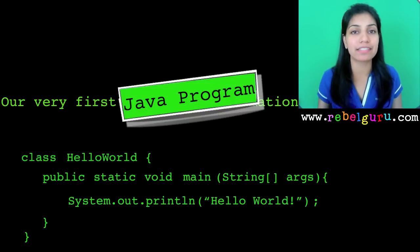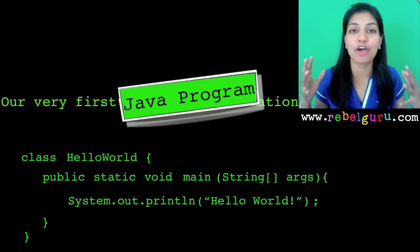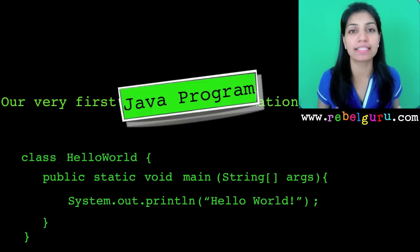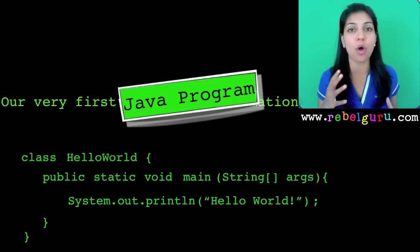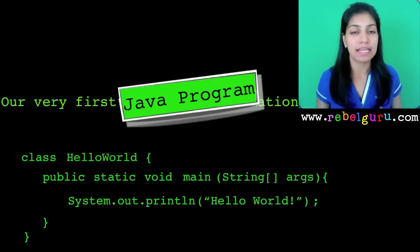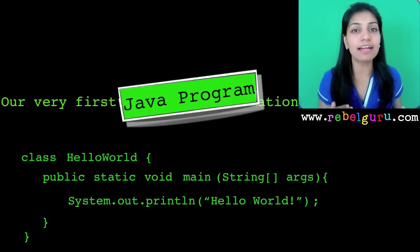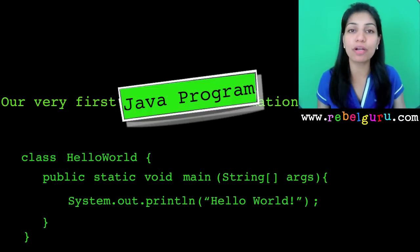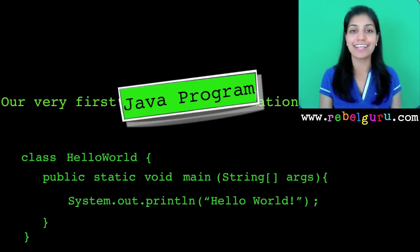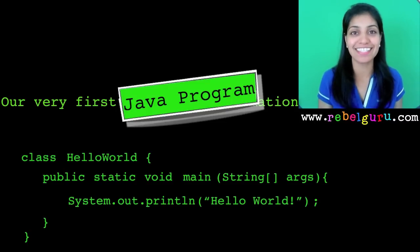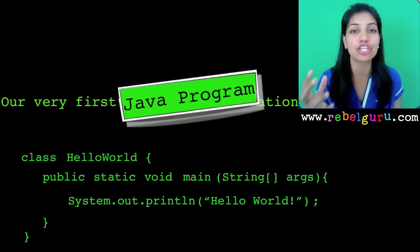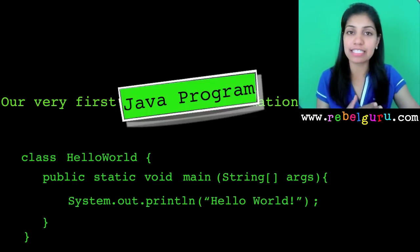The next line is 'public static void main(String[] args)', which is essentially your main method — where execution begins. In Java, the main method is always a part of a class. In this case, the main method is part of the class called HelloWorld. The third line is the only line in the main method, which does the magical job of printing 'Hello World' on the screen using System.out.println.